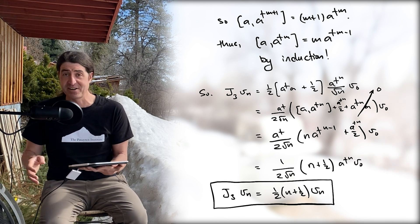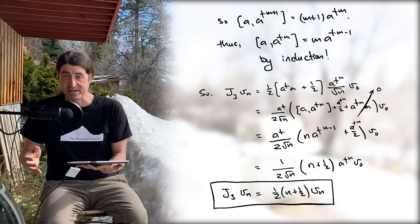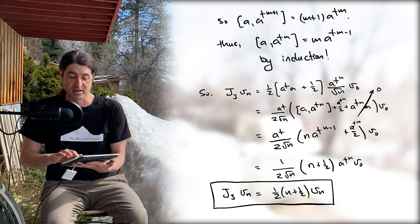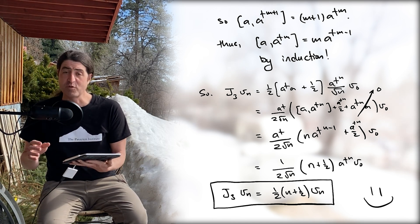In other words, a dagger a acting on a dagger to the m on v0 gives us m a dagger m on v0, which basically proves the claim. We're done. Great!